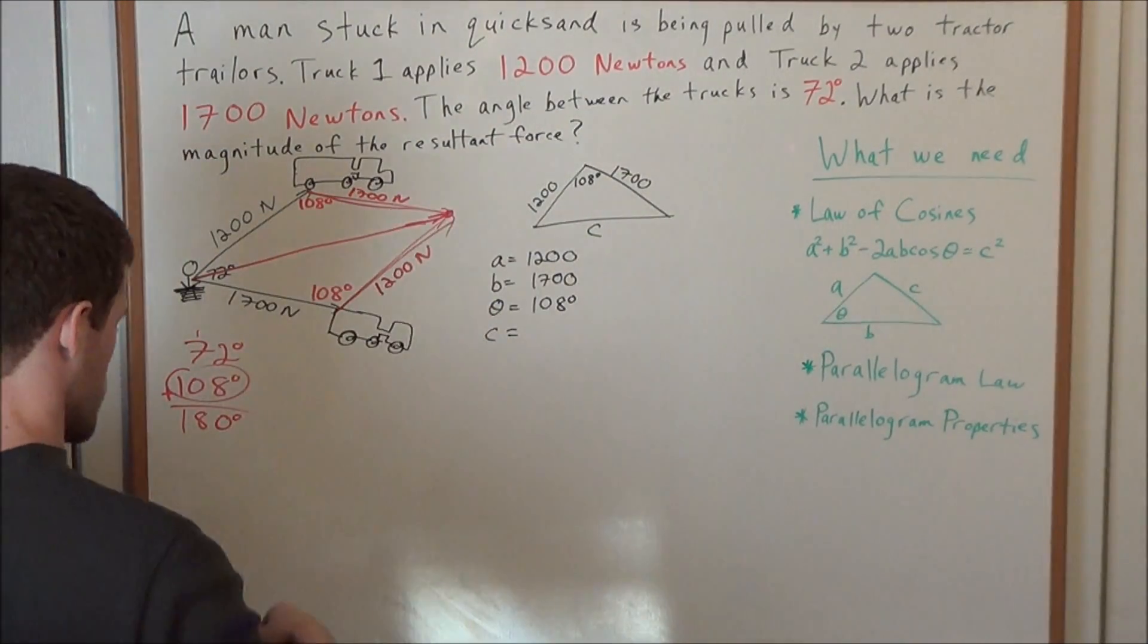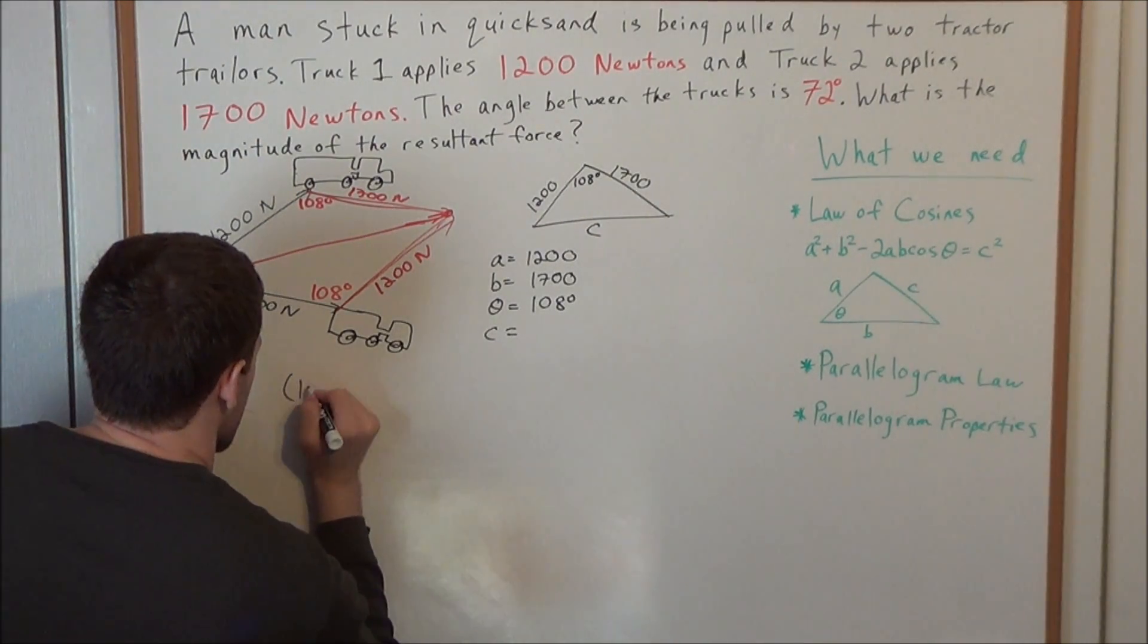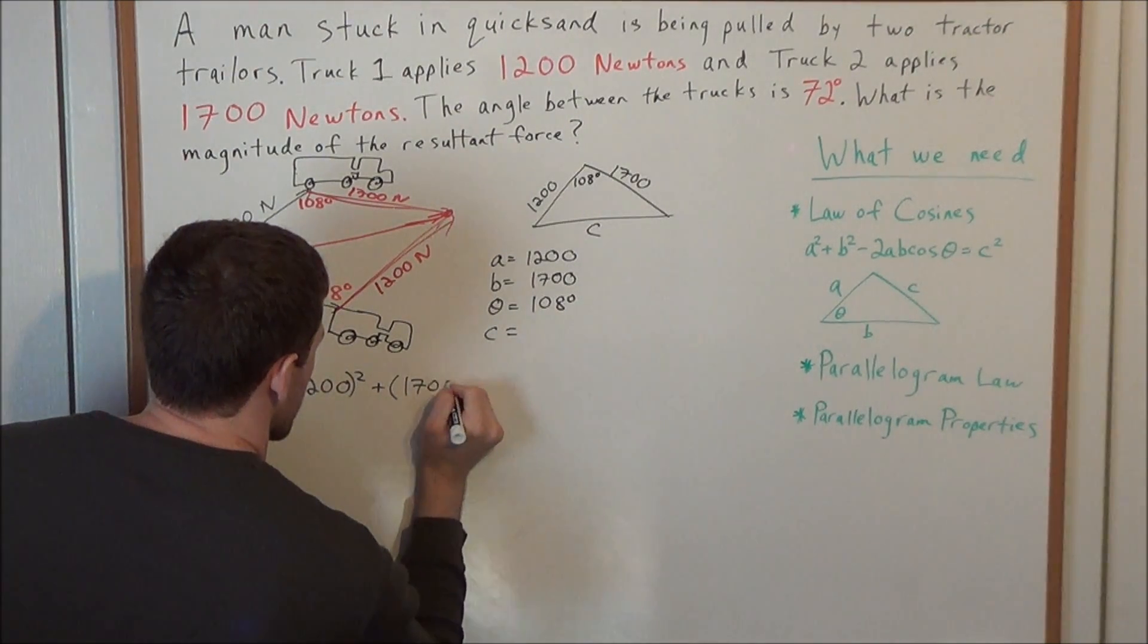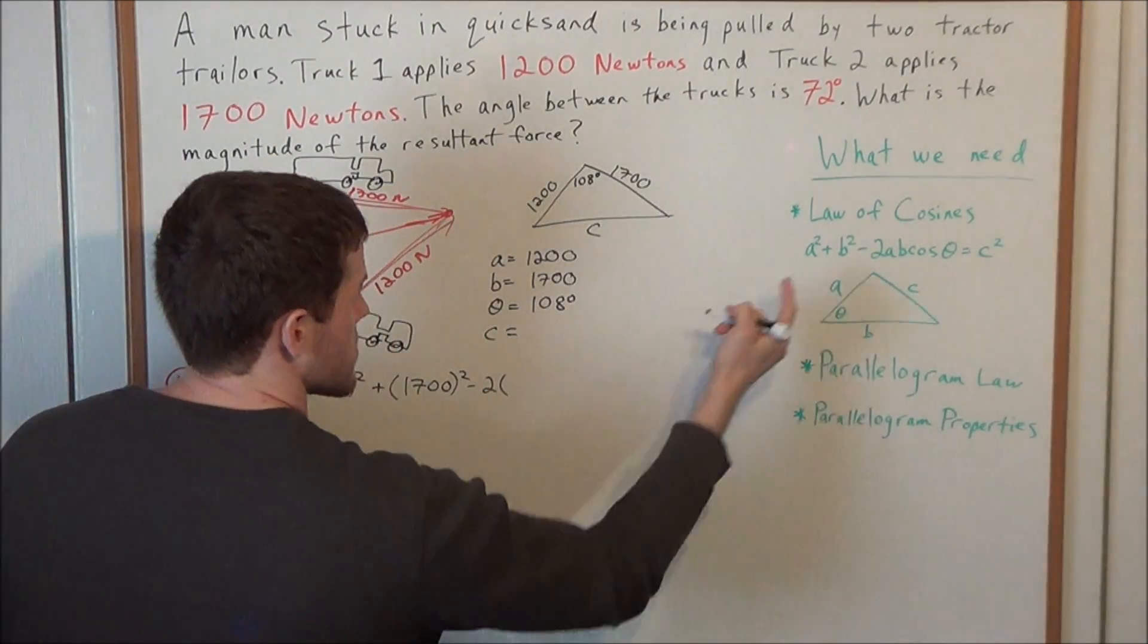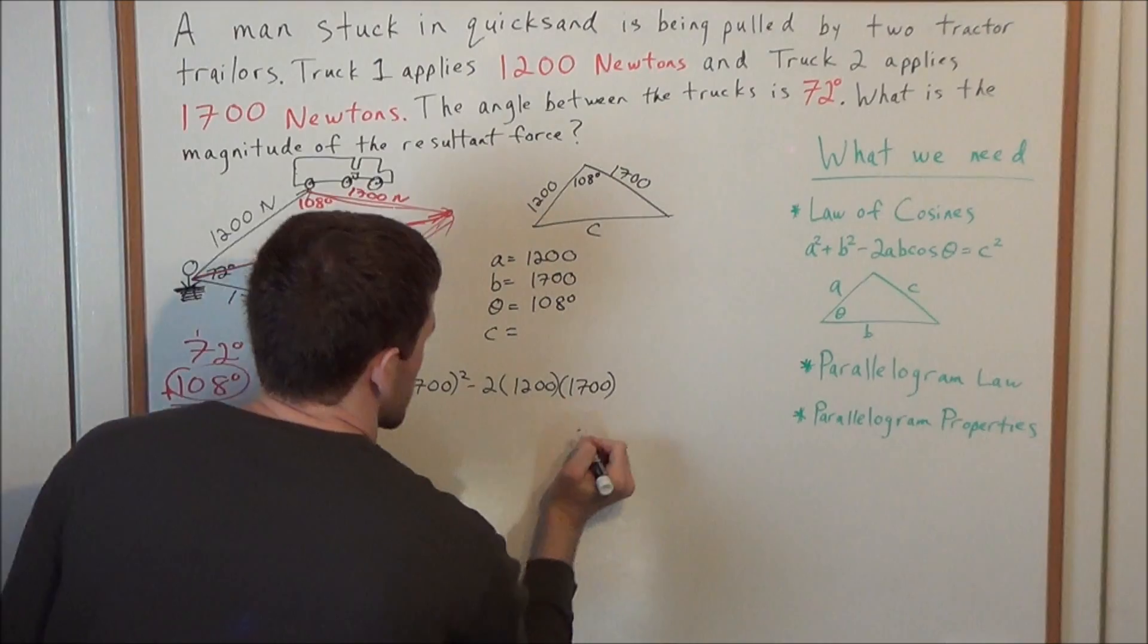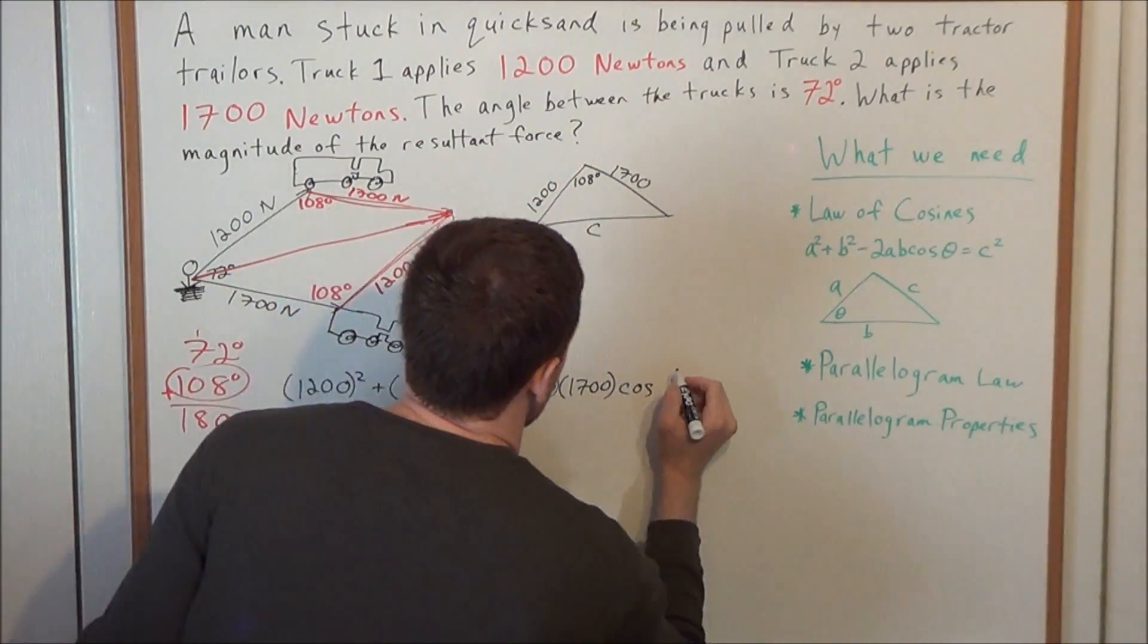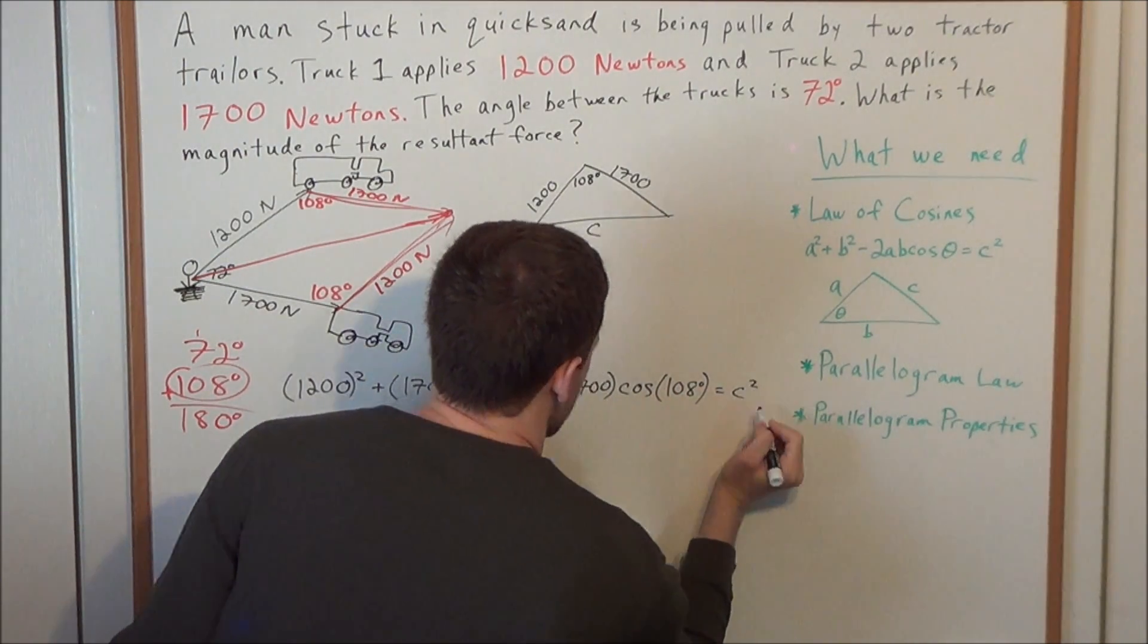We have 1200 squared, plus B squared, which is 1700 squared, minus 2 times A, in this case A is 1200, times B, which is 1700, times cosine of angle theta. So we have cosines of 108 degrees, and this is equal to C squared.